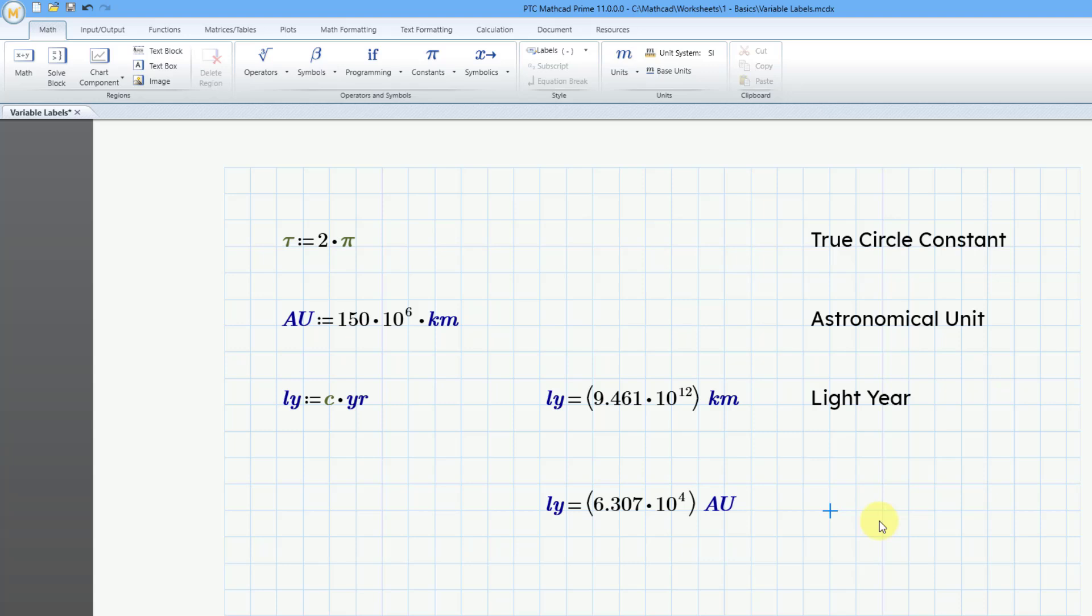So there you have it. That's how you can create your own constants and units. Be aware that there are some other different choices here, but they're probably not that usable.